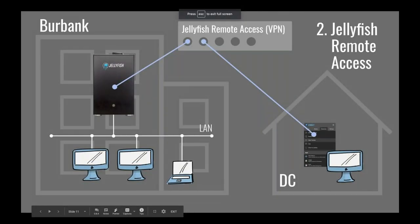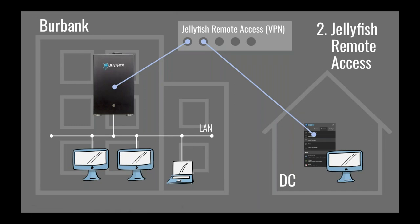Now for Jellyfish Remote Access — the diagram gets slightly more complicated. We have two premises: the office in Burbank on the left with a Jellyfish Mobile, and Raybar's place in DC on the right with his client machine. At the top is Jellyfish Remote Access — a VPN point-to-point service LumaForge sets up, connecting both machines to the same virtual network so they can talk to each other. Raybar can mount the Burbank Jellyfish storage just like the local one, but at internet speed rather than 10 gig ethernet.